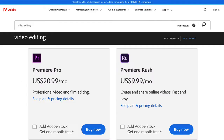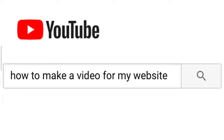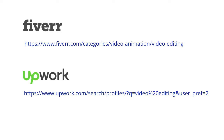You can always go to Adobe — they have several editors, but they will cost you. If you need help, you can always go on YouTube. For those who don't want to tackle that, you can hire a video editor. Fiverr.com and Upwork.com — rates are hourly and range anywhere from $10 to $50 an hour. But you can do this yourself; you can do a short video on your iPhone. Give it a try.